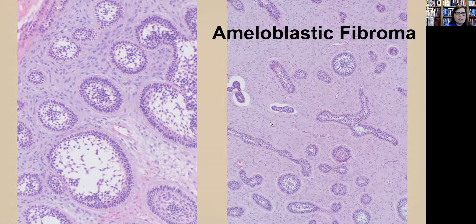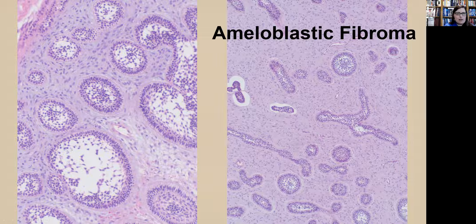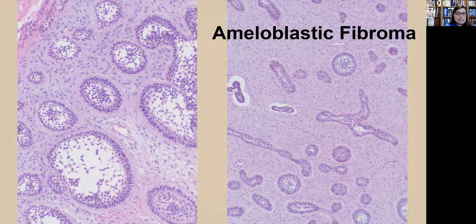The ameloblastic fibroma has a primitive mesenchymal myxoid stroma with small strands and islands of ameloblastic epithelium. These are pediatric lesions seen in the posterior jaw — younger patients. The stroma is very characteristic. Versus the large resections with one to one-and-a-half centimeter margins we use for ameloblastoma, ameloblastic fibromas can be treated with a more conservative excision with negative margins — you don't need larger oncologic-type excisions.